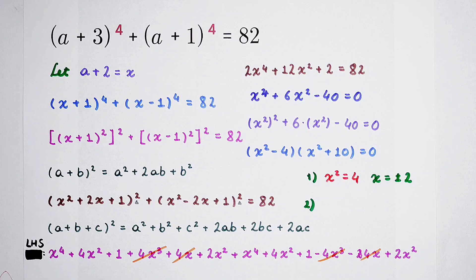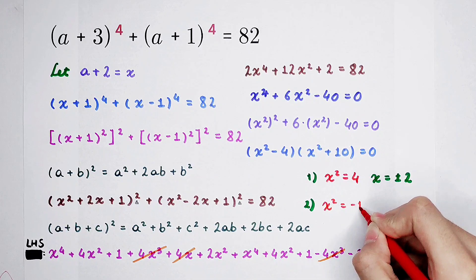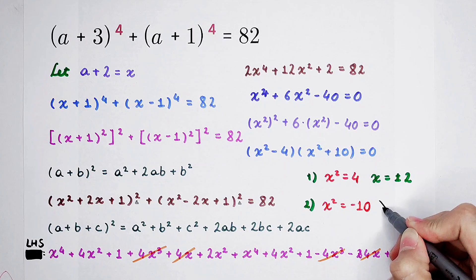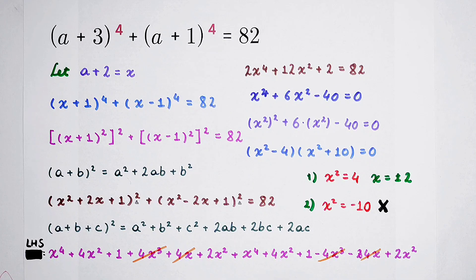The second case: x squared is negative 10. Of course, there aren't any real roots in this case. So only under the first case, there are two roots.